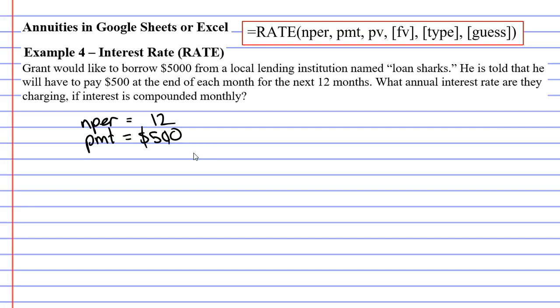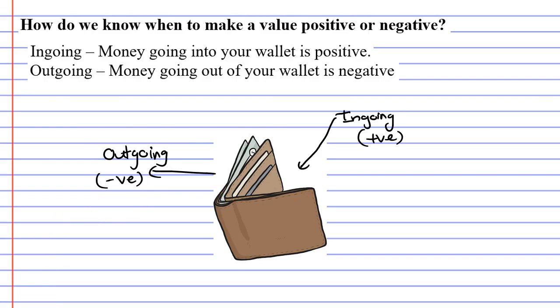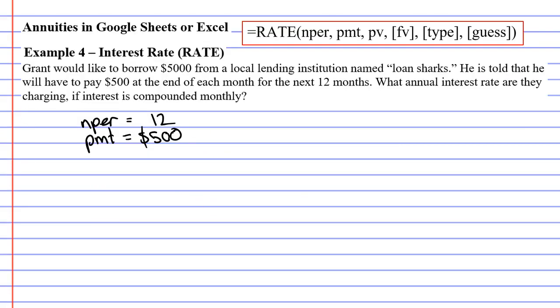And remember we need to check whether this is a positive or negative amount. Going back to the picture of our wallet, remember that a repayment is a negative amount because it's an outgoing. If you imagine a wallet with your money in it, every time you make a repayment, that money comes out of your wallet. So we need to write down that it's negative $500.